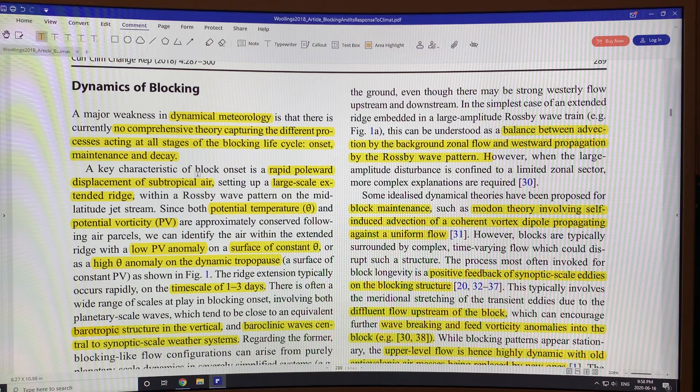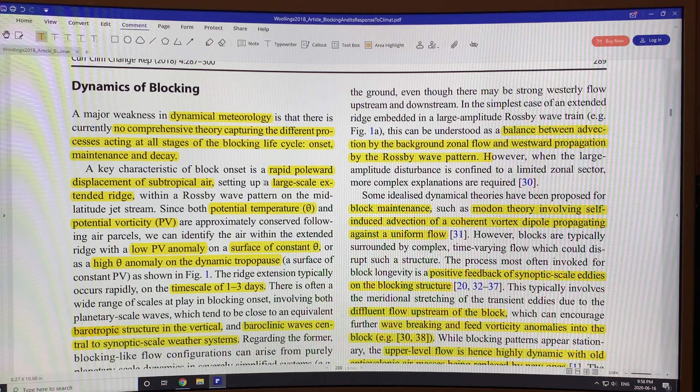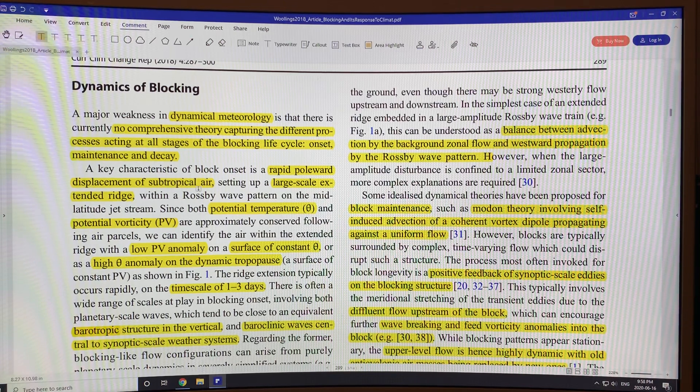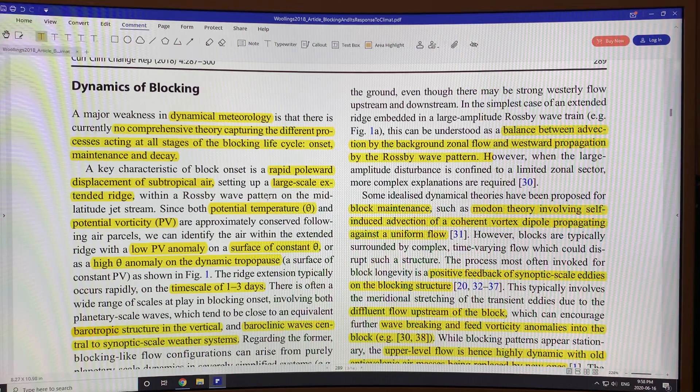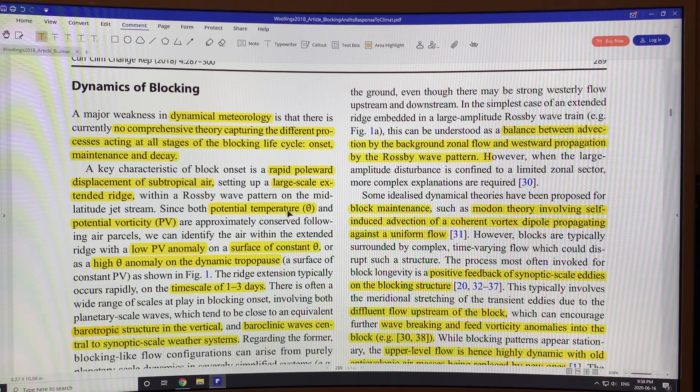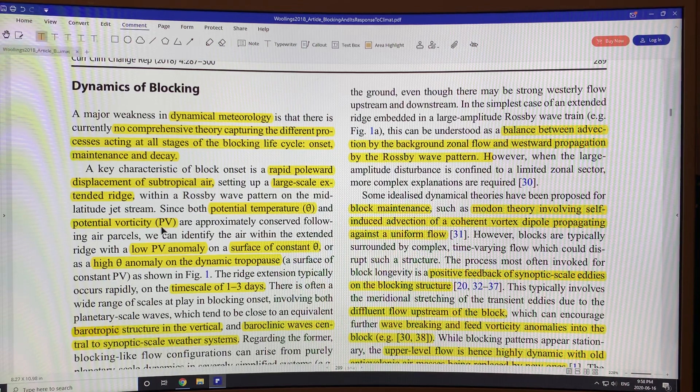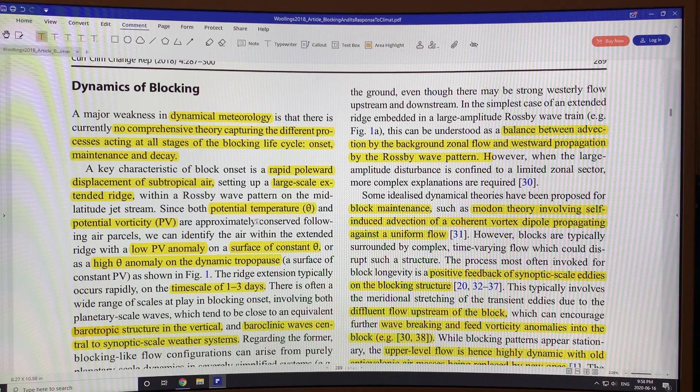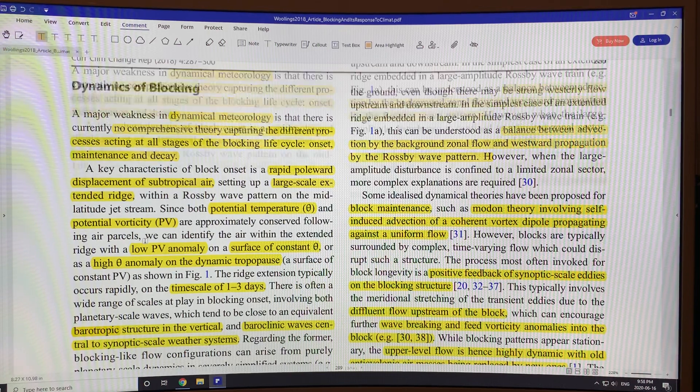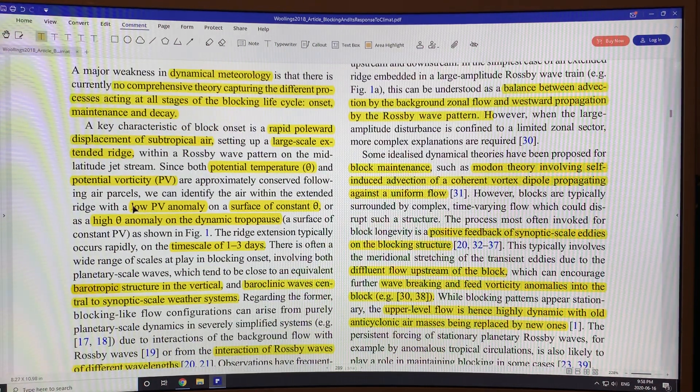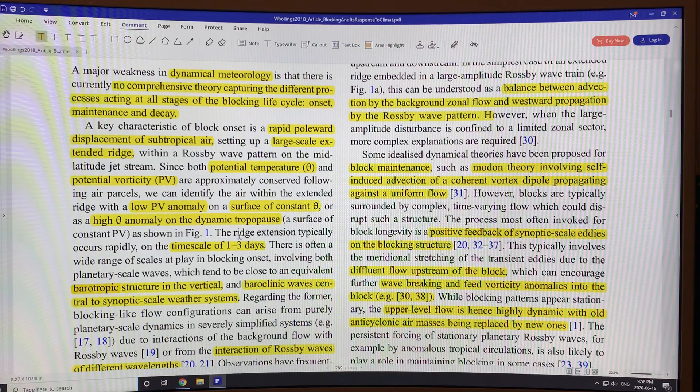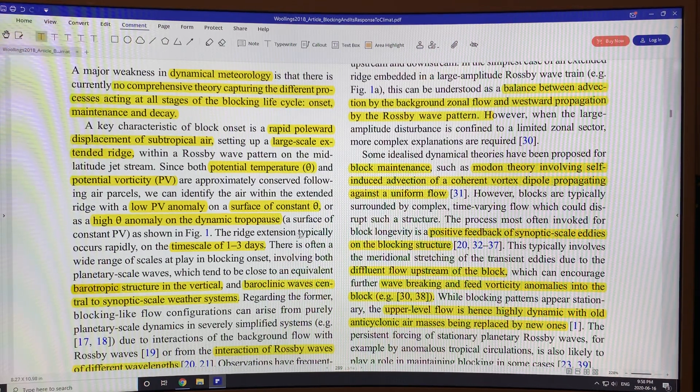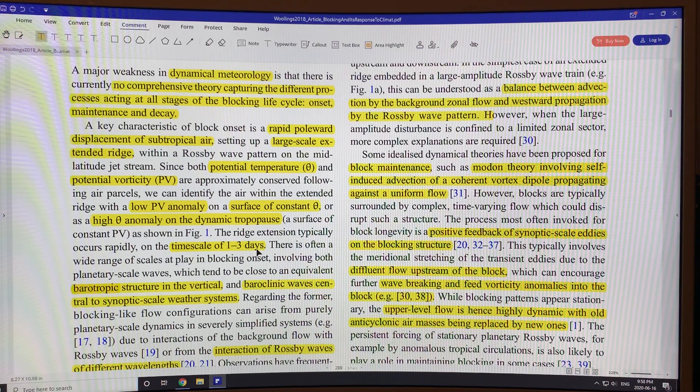A key characteristic of the onset of the block is a rapid poleward displacement of subtropical air. So you get a large-scale extended ridge within a Rossby wave pattern on the mid-latitude jet stream. Both the potential temperature theta and the potential vorticity are approximately conserved following air parcels. If the potential vorticity increases in one region, it has to decrease in an adjacent region. Same with the temperature. Development of the ridge extension occurs rapidly, typically on the time scale of one to three days.